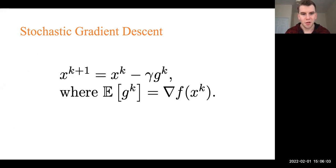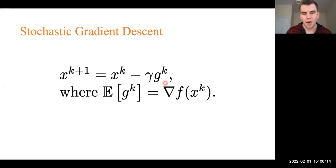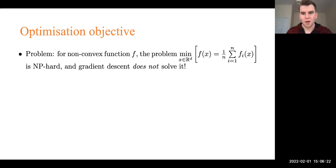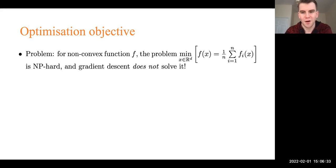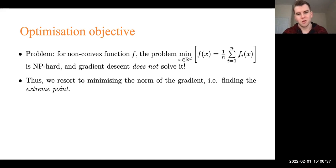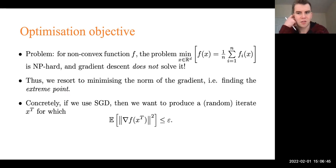We try to solve this problem through stochastic gradient descent, producing random iterates where x_k is the current iterate, gamma is the step size, and g_k is some unbiased estimator of the gradient at x_k. The function we want to minimize can be non-convex, and minimizing non-convex functions is NP-hard, so we resort to minimizing the norm of the gradient to find a stationary point. The method can converge to saddle points rather than local minima, but addressing that is outside the scope of this talk.